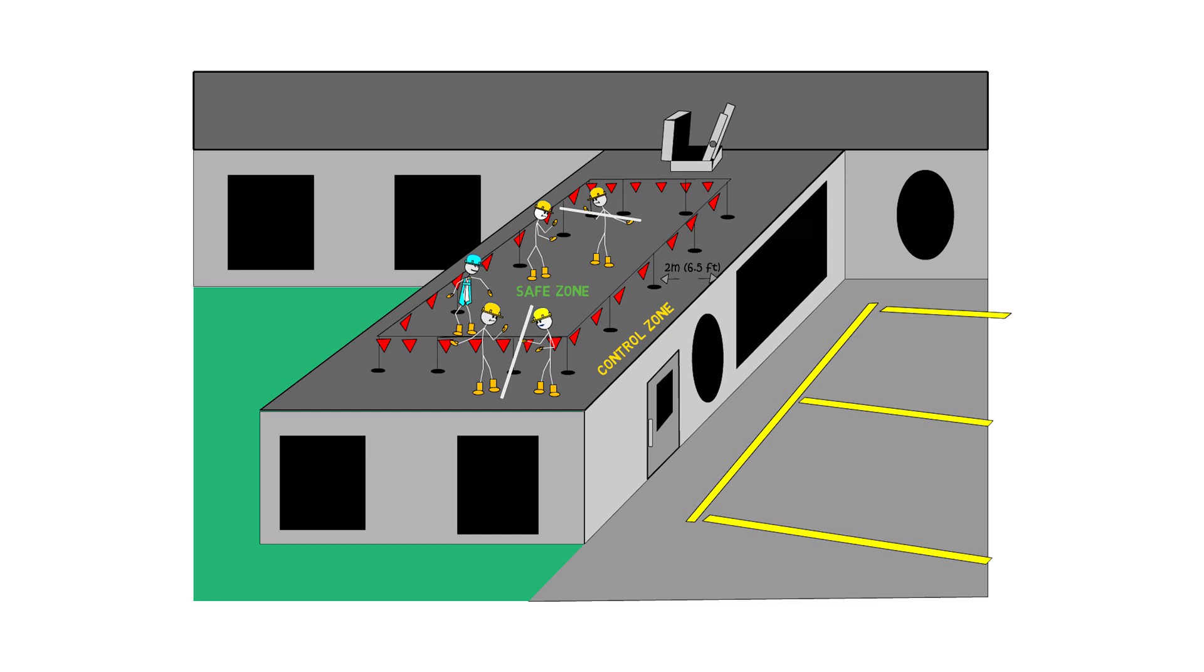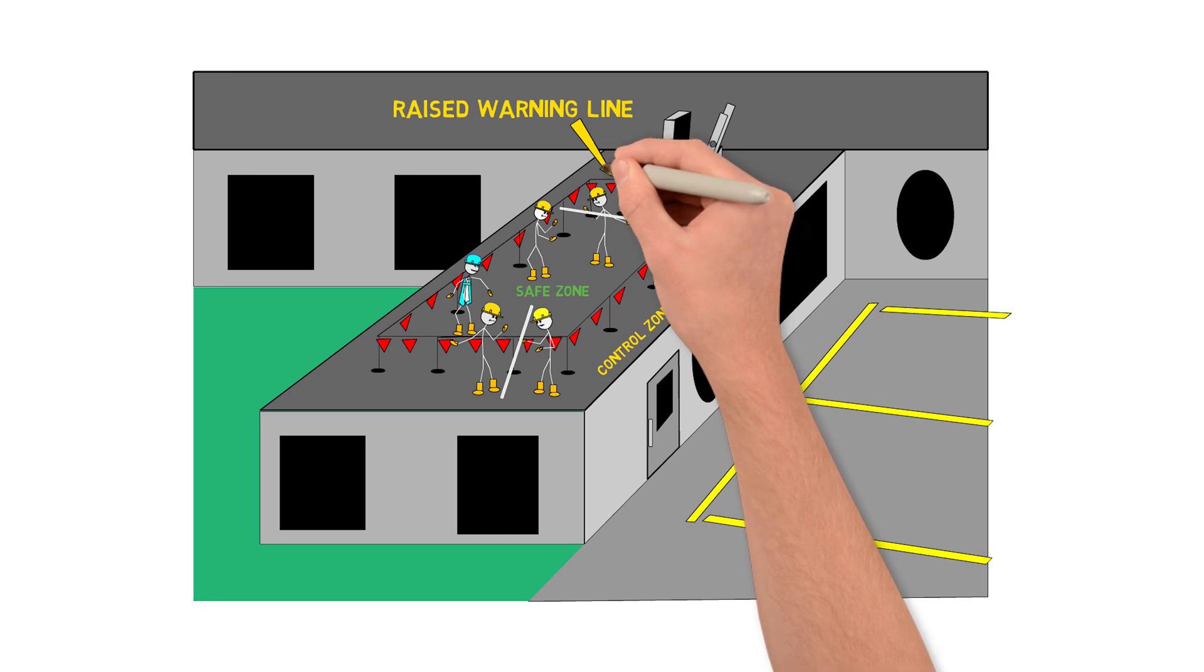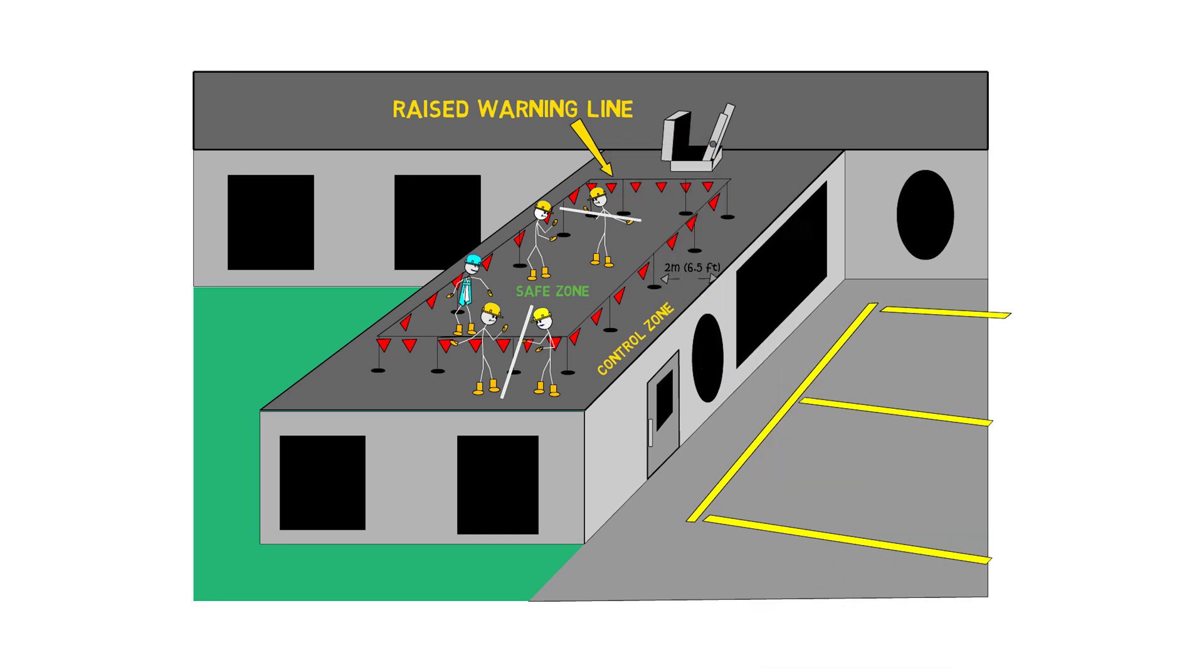A line defining the control zone must be established along the internal edge of the control zone by a raised warning line or other equally effective means at all times during such work. For example, an acceptable raised warning line includes a line with high visibility material or a line flagged or clearly marked with high visibility materials at intervals not exceeding two meters or six and a half feet, rigged and maintained to be between 0.85 meters and 1.15 meters or 34 and 45 inches above the working surface.